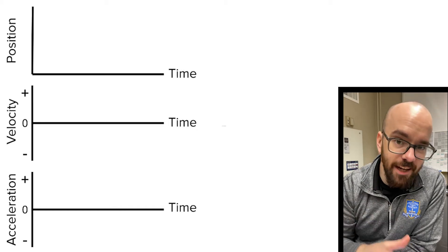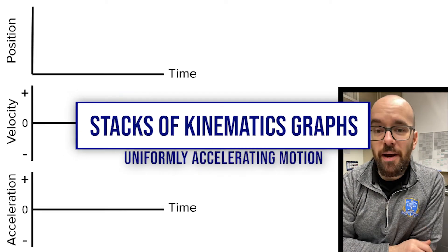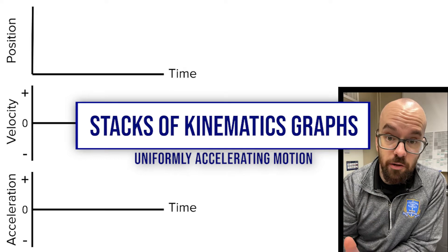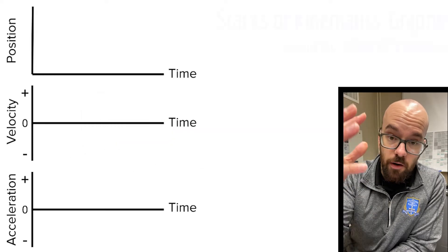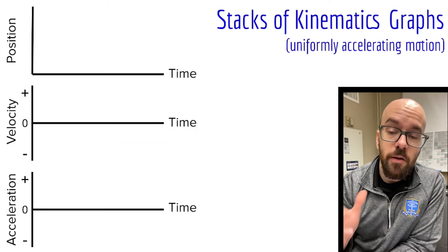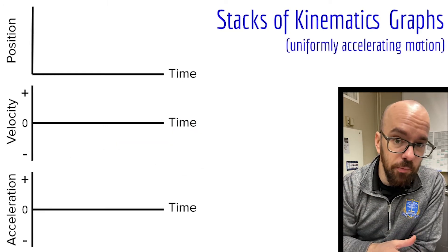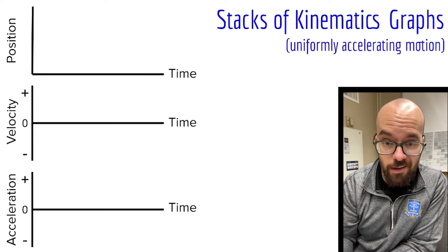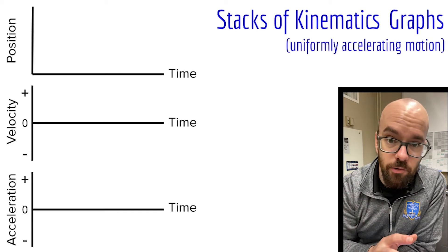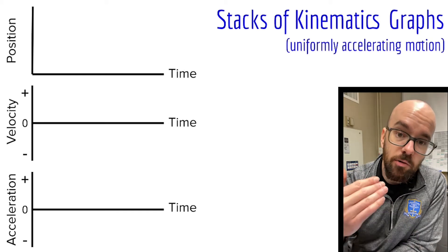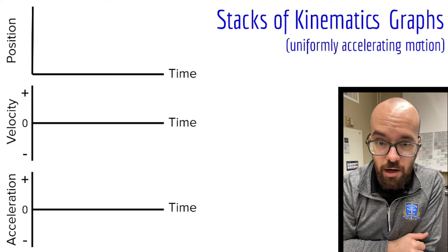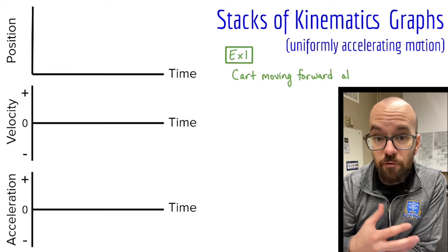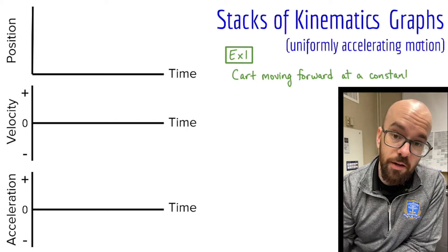In this video we're looking at stacks of kinematics graphs — a position, velocity, and acceleration graph that all correlate to the same motion. For each example we go through, we're going to take a look at a cart moving along a track, then draw a velocity graph of that motion, and then a corresponding position and acceleration graph. Let's take a look at our first example, which is a cart moving forward at a constant speed.